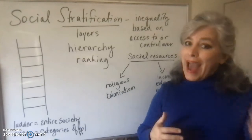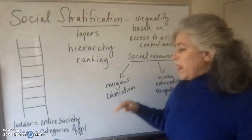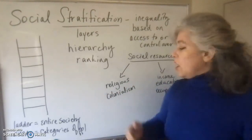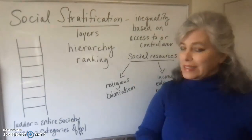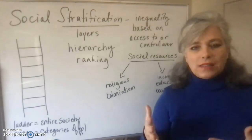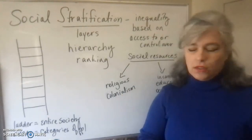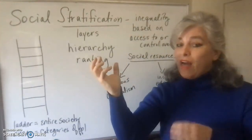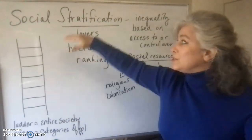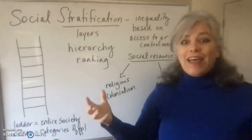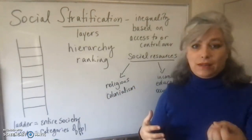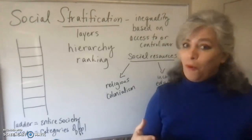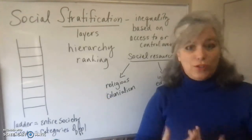Many societies, such as the caste system in India, are based on religious categories that are part of the Hindu belief system. The caste system has a religious foundation, and religion is a social institution that affects other social institutions. Since social stratification is a social institution, religion is affecting social stratification in India's caste system — whether you yourself are a follower of Hinduism or not, it affects macro-scale social structure.